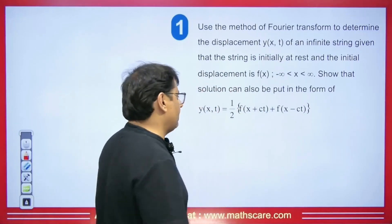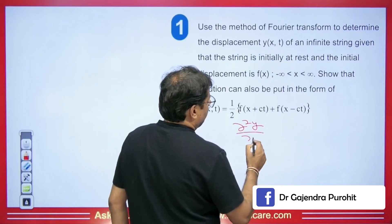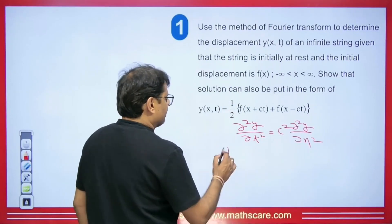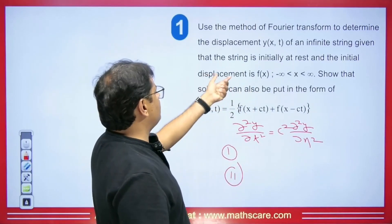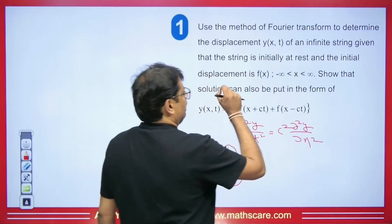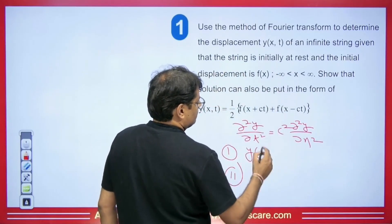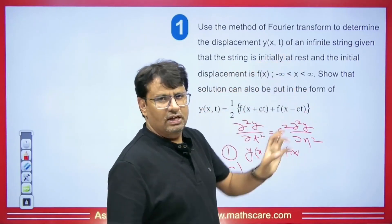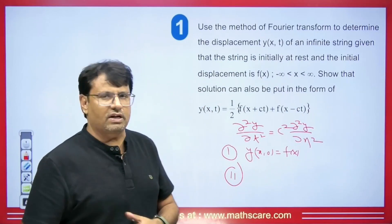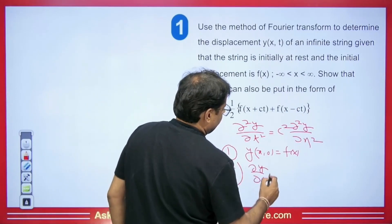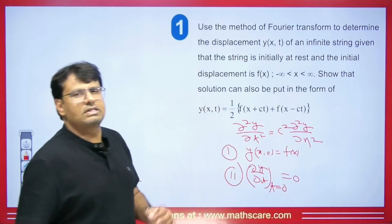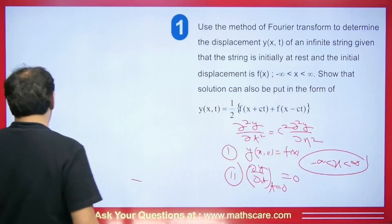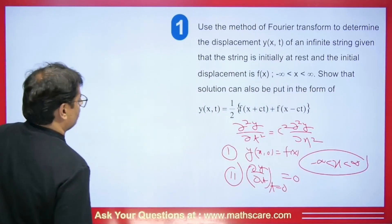Whenever we have an infinite string, we have a wave equation: ∂²y/∂t² = c² ∂²y/∂x². The conditions are: the initial displacement y(x,0) = f(x), and since the string is initially at rest, its velocity is zero, so ∂y/∂t at t=0 equals 0. Also x ranges from −∞ to ∞, so we can easily solve this using the Fourier transform. We take the Fourier transform of both sides.